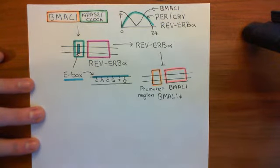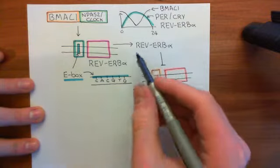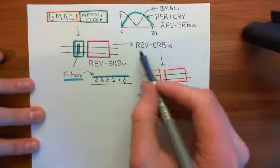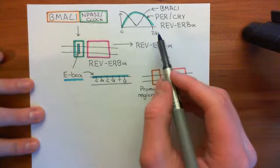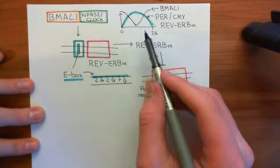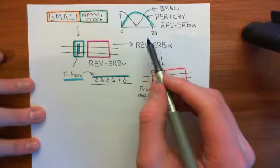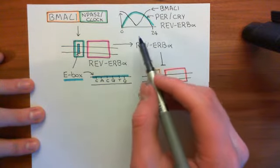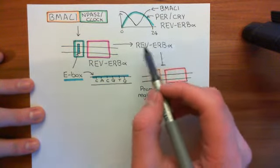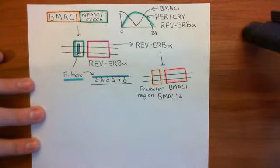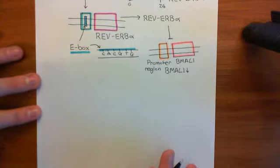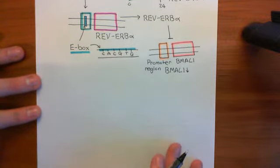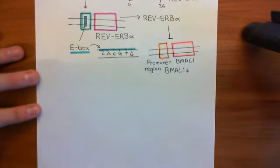If you chop out this accessory loop — for instance, by knocking out Rev-ERB-alpha — you still get the oscillation in period and cryptochrome. So the transcriptional-translational feedback loop alone is enough to produce this 24-hour oscillation. This is an accessory loop that helps out. We now want to talk about what is the point of having this circadian oscillator within all of your cells.